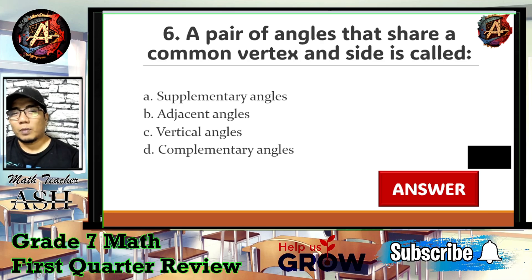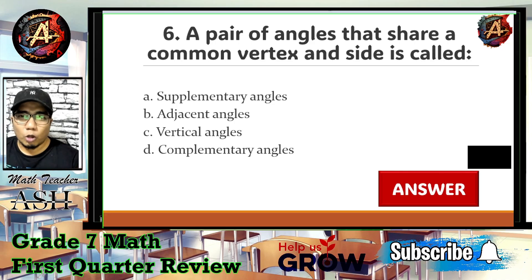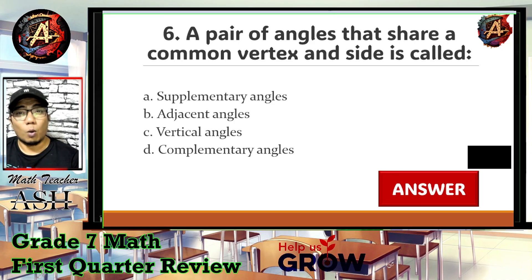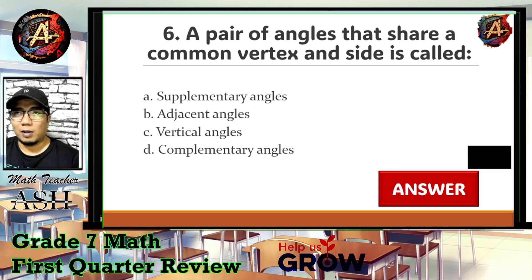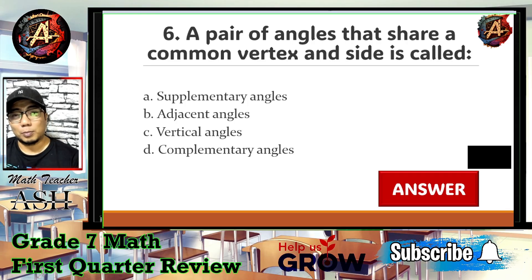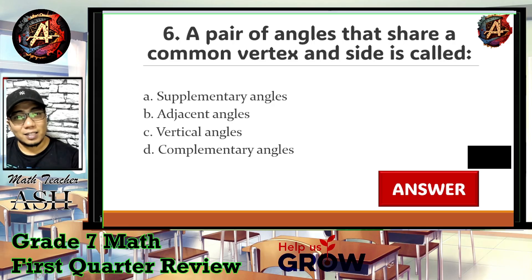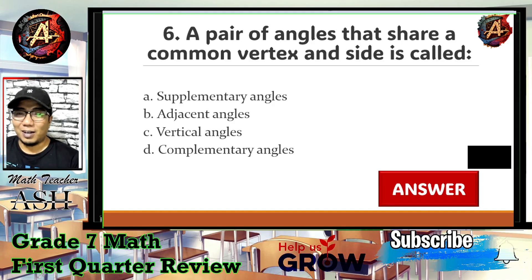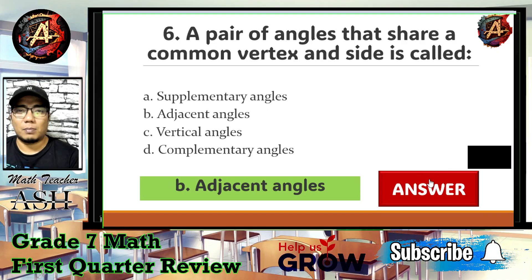Considering the definitions: supplementary angles sum to 180 degrees; vertical angles are back-to-back angles formed when two lines intersect; complementary angles sum to 90 degrees. The only remaining choice is adjacent angles — angles that share a common side and a common vertex. So letter B is the correct answer.